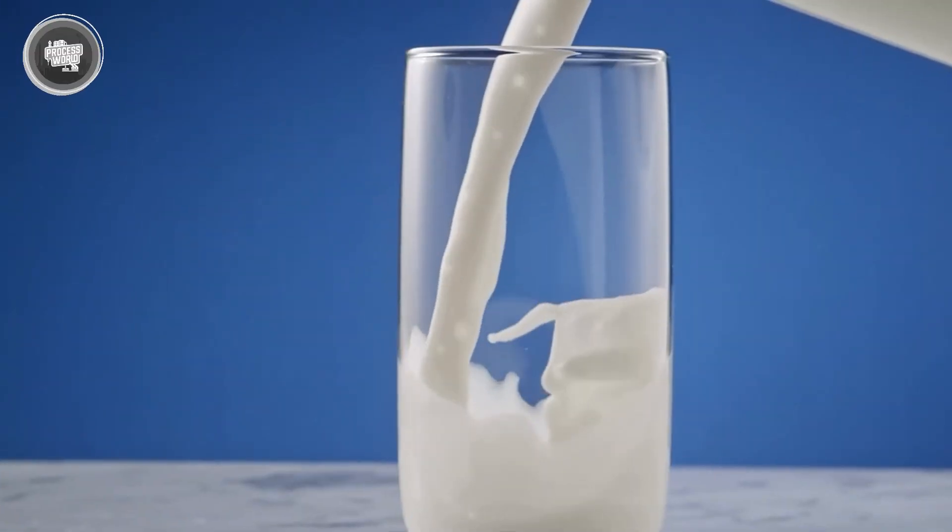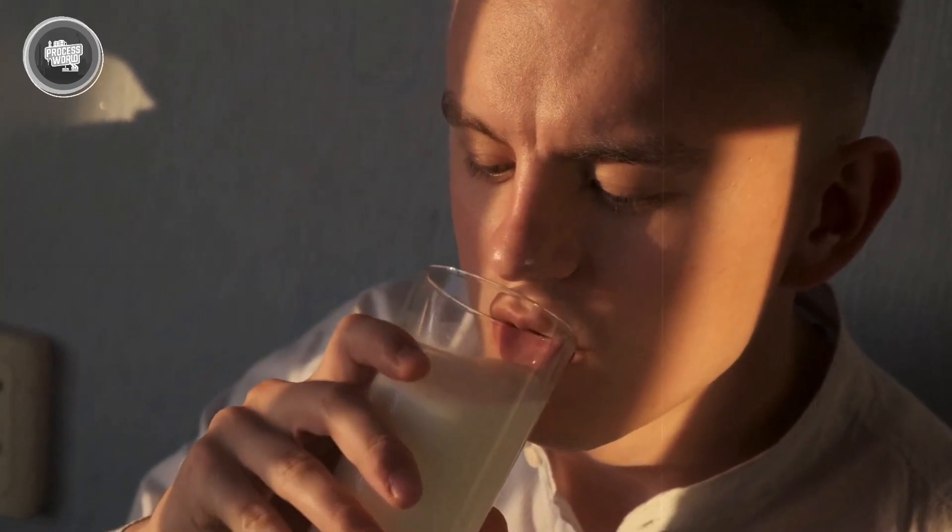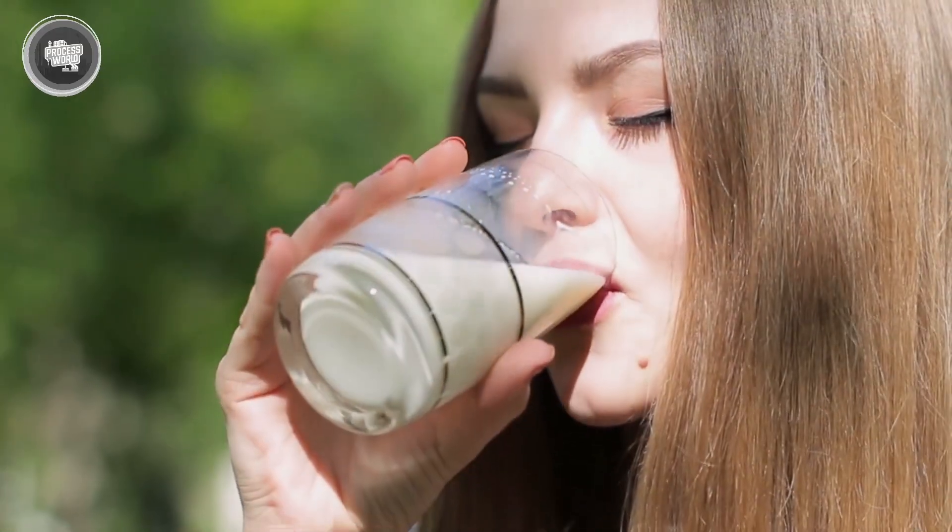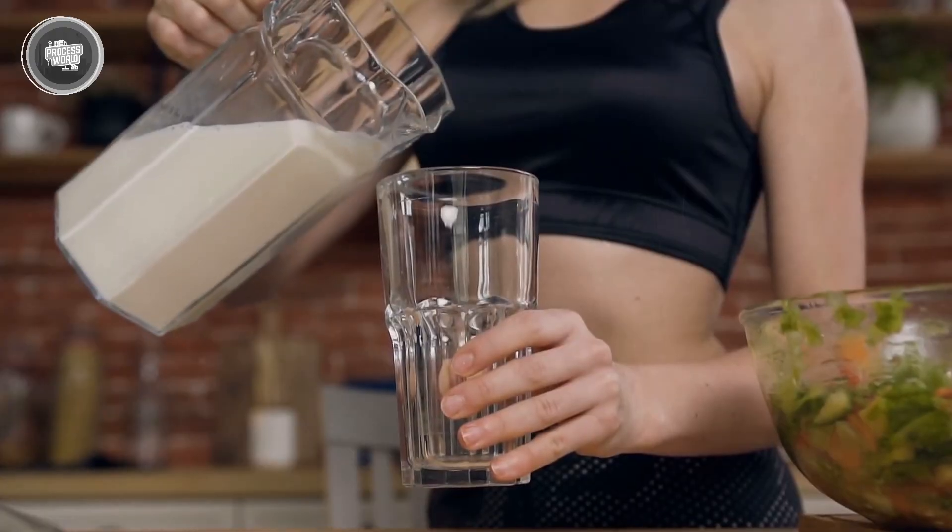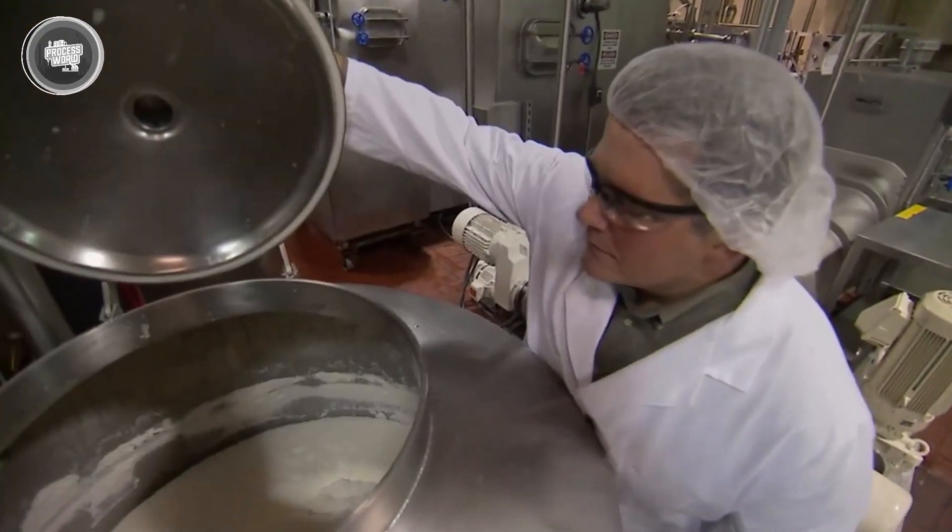And that's how fresh milk is transformed into powder that can last for months without a fridge. Now, here's something to think about. If we can turn liquid milk into powder so easily, what other foods can we turn into powder just like milk? Drop your guesses and takes in the comments section below.